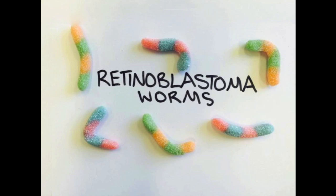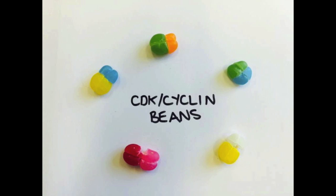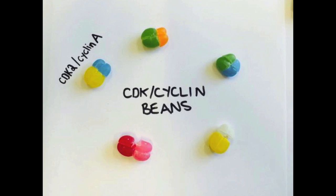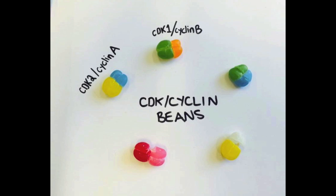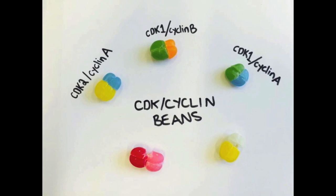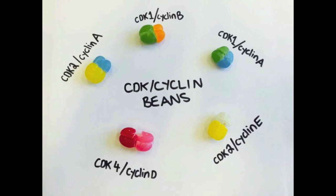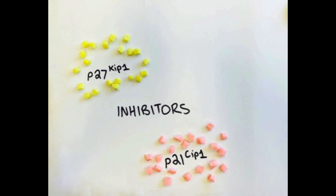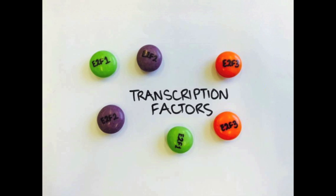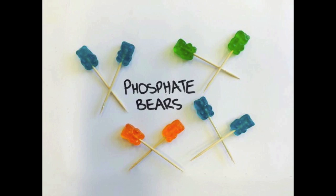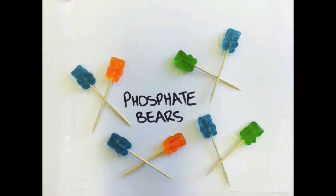Sour worms represent the retinoblastoma protein, jelly beans represent CDK cyclin complexes, starburst chews represent CIP-KIP inhibitors, smarties represent transcription factors, and gummy bears represent phosphate groups.